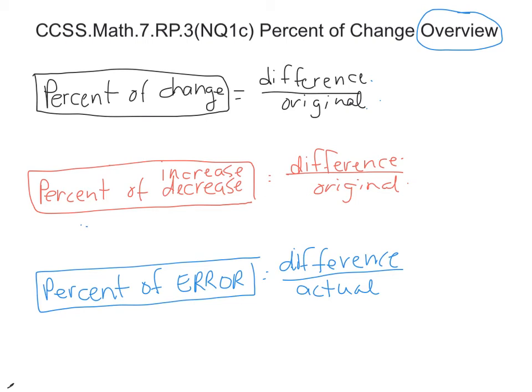And then, percent of error, that is when you are estimating. So you're going to take the difference of the estimation and the actual, the estimation and the actual, you're going to take this difference or subtract it, over the actual.